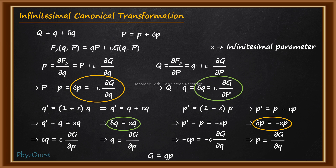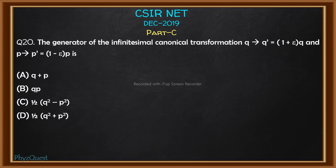Therefore, the generating function G = qp is the correct answer for the infinitesimal canonical transformation given in the question. Checking the options, this matches option B, so the correct answer is option B.